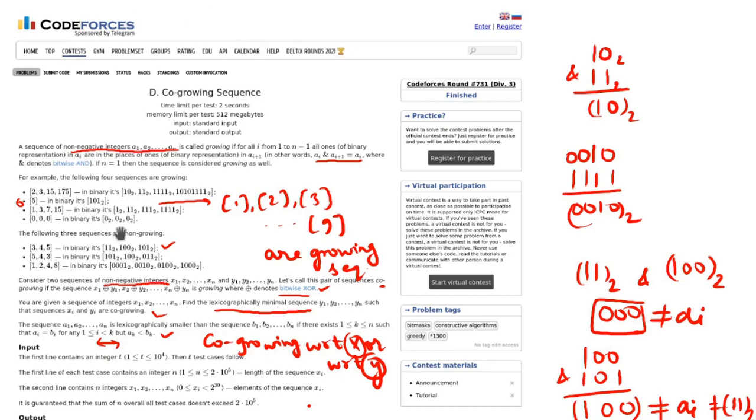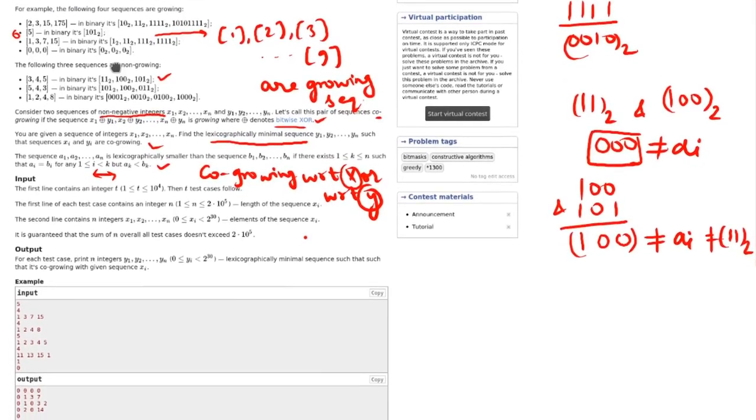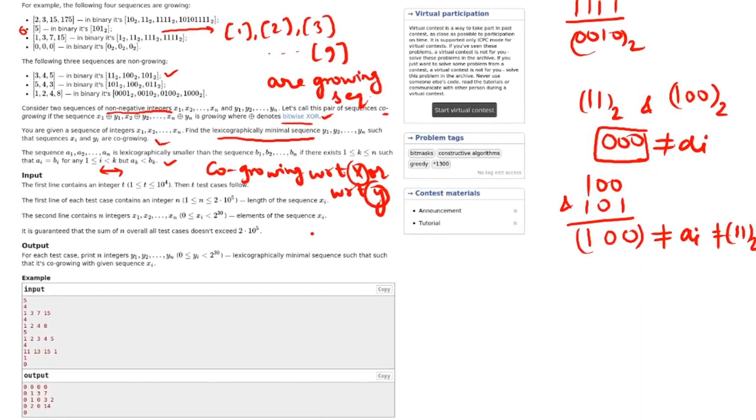And if you look at the input constraints, we can find out that the test cases are of order 10^4, n is of order 10^5. So maximum feasible solution or the time complexity which can be accepted should be order of t times n.